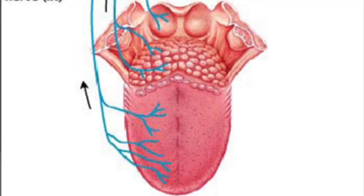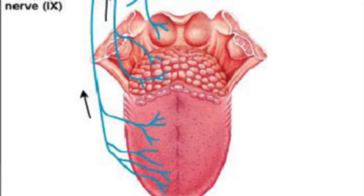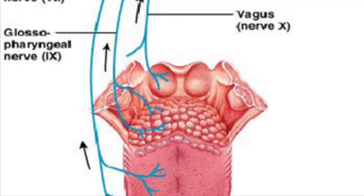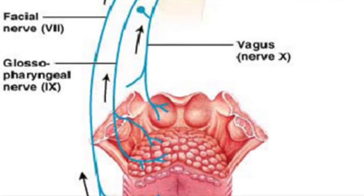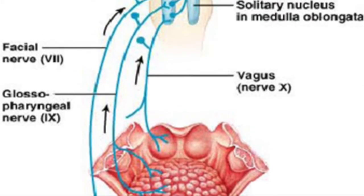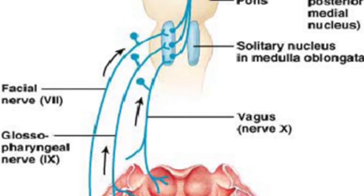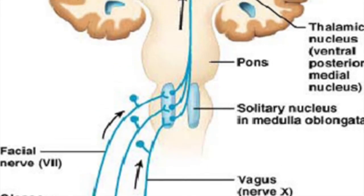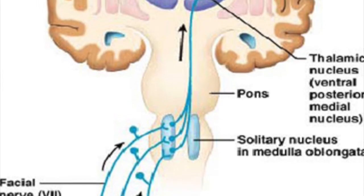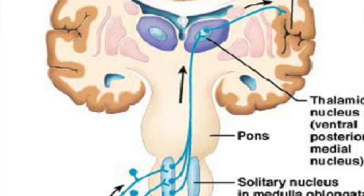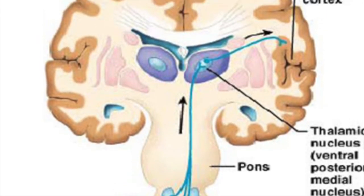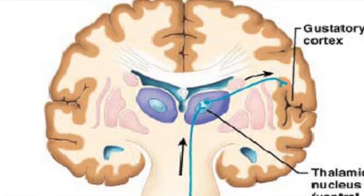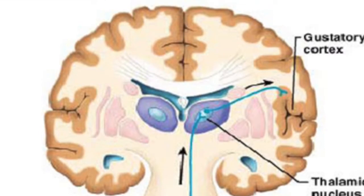The gustatory pathway transmits taste information to the brain after it has been gathered by the cells of the taste bud. Information is sent via three different cranial nerves. The facial nerve transmits impulses from the taste receptors in the anterior two-thirds of the tongue, while the glossopharyngeal services the posterior third and the pharynx. The vagus nerve transmits information gathered by the few taste buds located on the epiglottis and the lower pharynx. These afferent fibers synapse in the solitary nucleus of the medulla, and from there impulses stream to the thalamus and ultimately to the gustatory cortex within the insula. Fibers also project to the hypothalamus and limbic system structures, which determine our appreciation of what we are tasting.